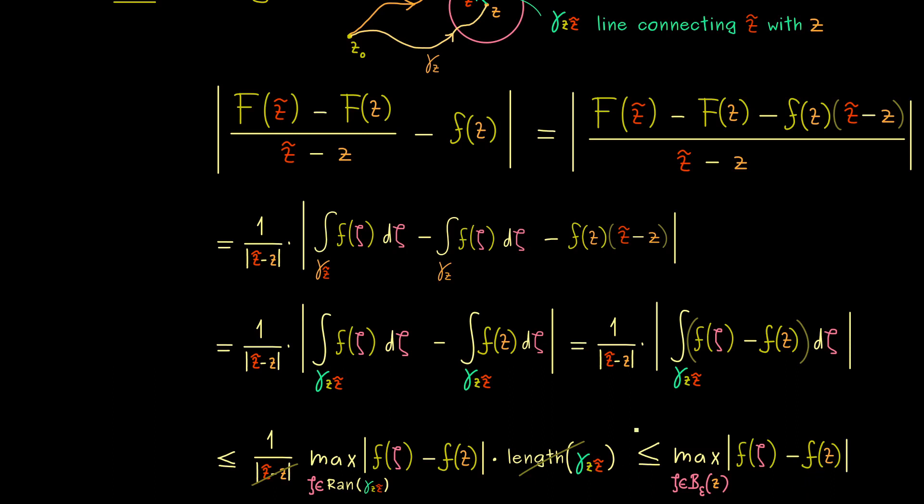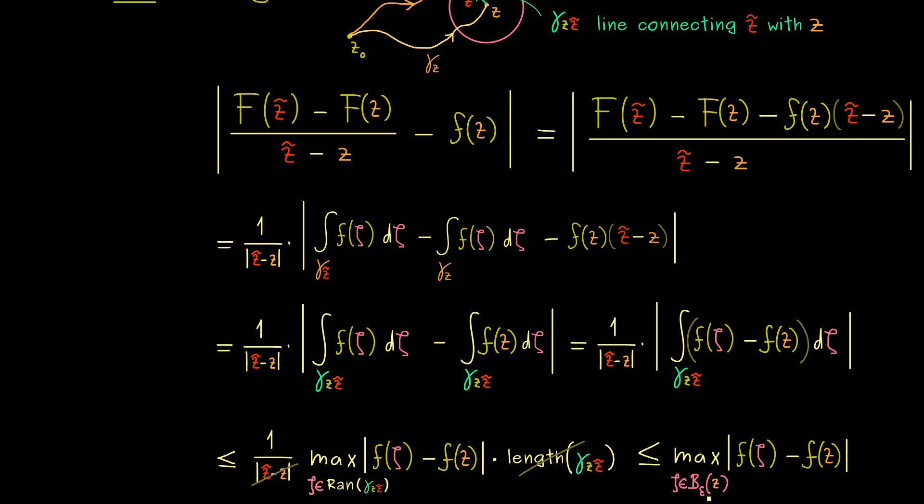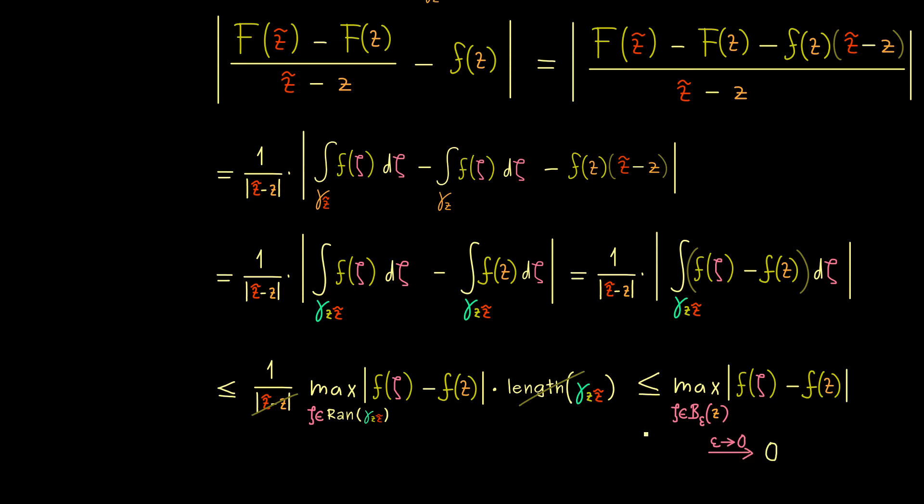At this point I don't have to say so much because we know we have a holomorphic function, so a continuous function. Which means, if epsilon gets smaller and smaller, this maximum gets also smaller and smaller. In other words, I can say, when we send epsilon to zero, this goes to zero. However, with this we also see, if we send Z tilde to Z, then this goes to zero. In other words, the derivative of capital F is just lowercase f. And with this you see our proof is finished. The existence of antiderivatives is connected to the contour integrals for closed curves to be zero. And now we have learned for open regions this goes in both directions. In other words, we have an equivalence there. So you see, we are getting closer and closer to this important theorem called Cauchy's integral theorem. And with this I really hope that I see you in the next video. Have a nice day and bye!